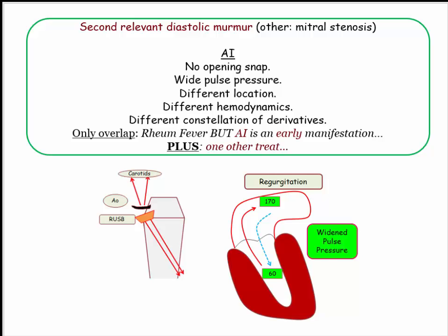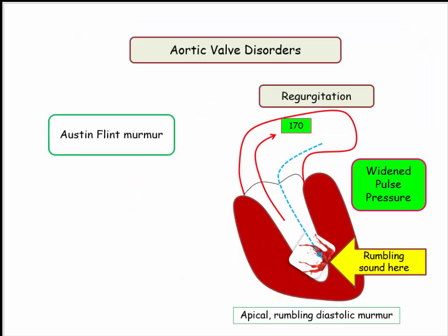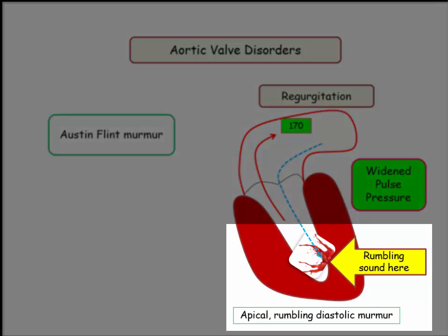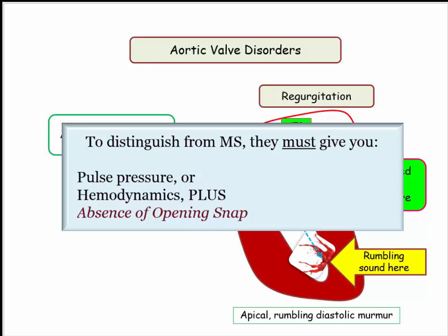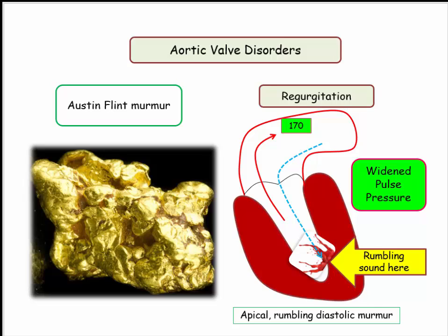On the distinction between mitral stenosis and aortic insufficiency, there is the Austin-Flint murmur, which occasionally pops up in Q-banks. It can muddy the waters when distinguishing aortic regurgitation from mitral stenosis. The murmur is described as an apical diastolic murmur secondary to regurgitation jets directed at the LV free wall — an apical rumbling diastolic murmur that sounds a lot like mitral stenosis. It must be distinguished from mitral stenosis by the company it keeps, including pulse pressure, other hemodynamic information, and the absence of an opening snap.